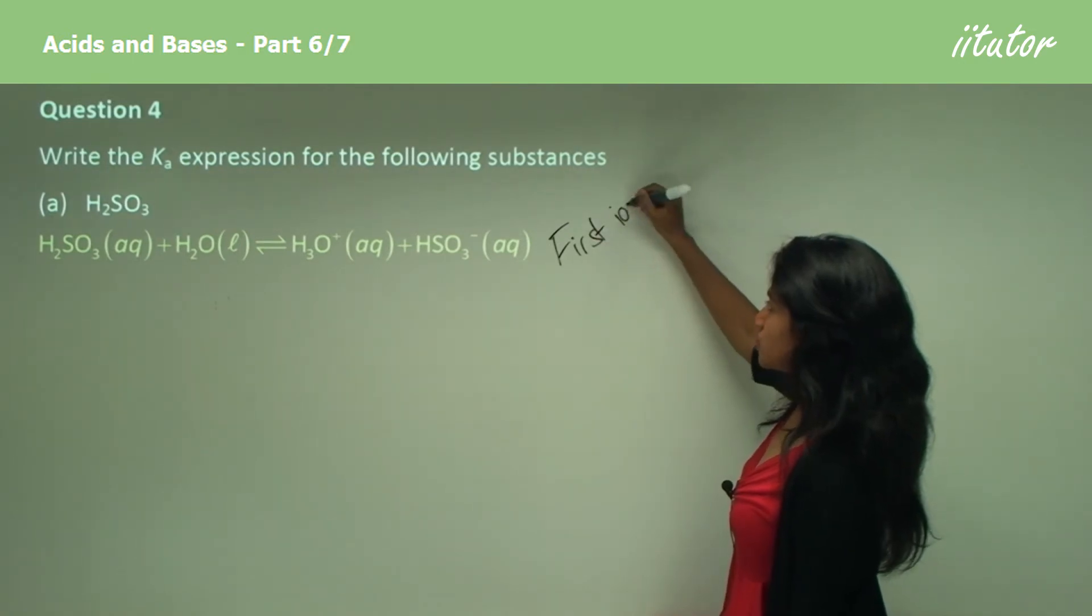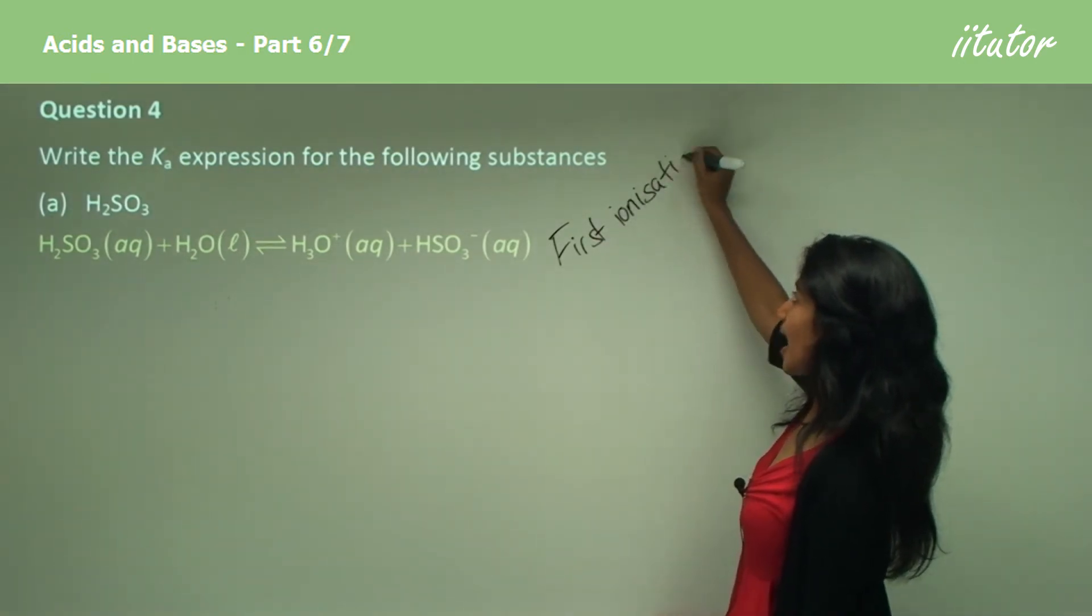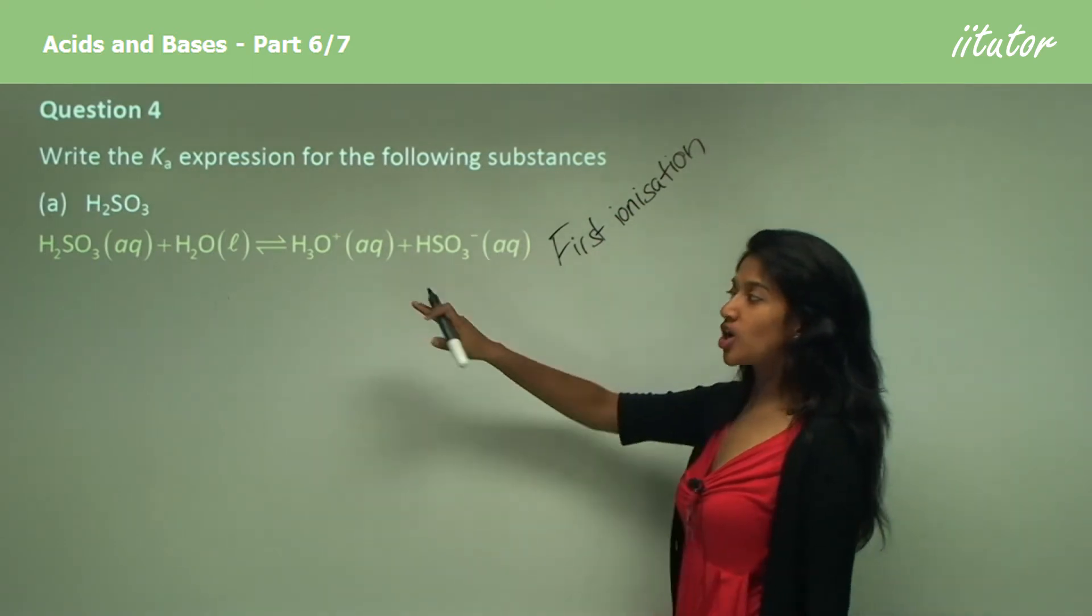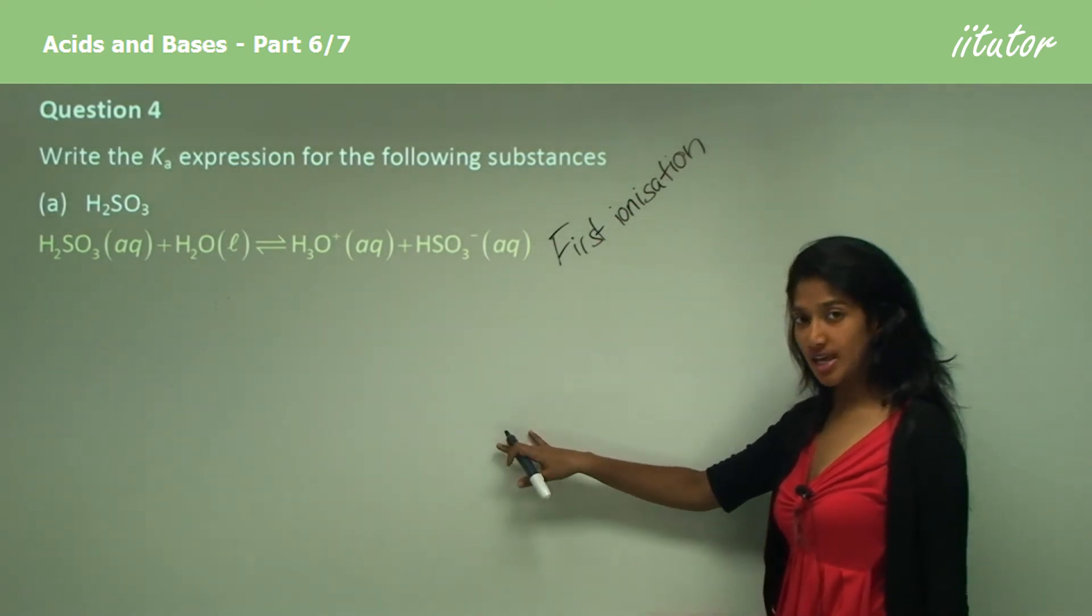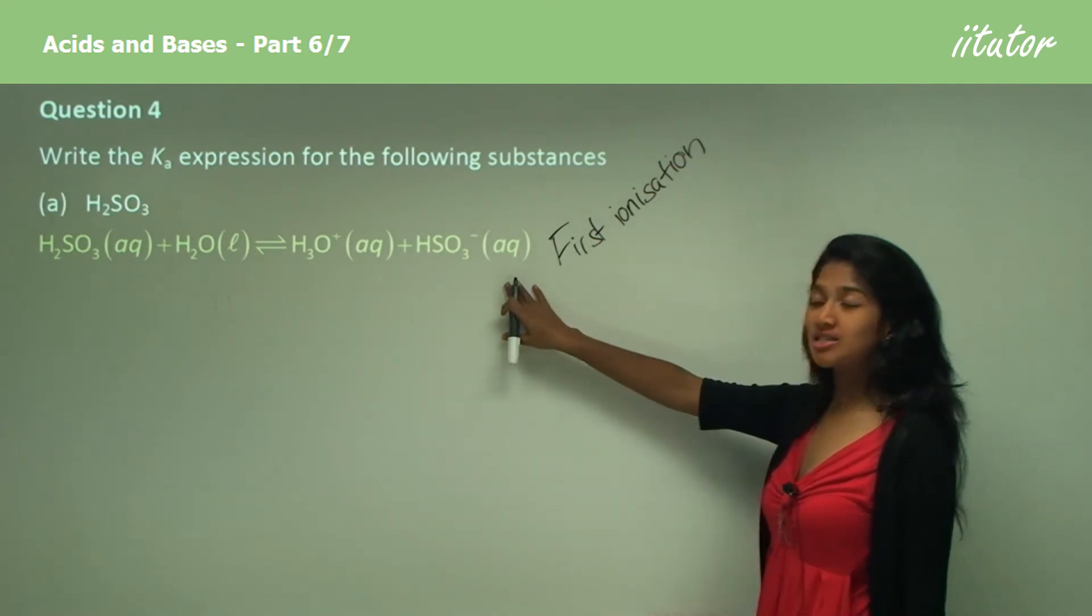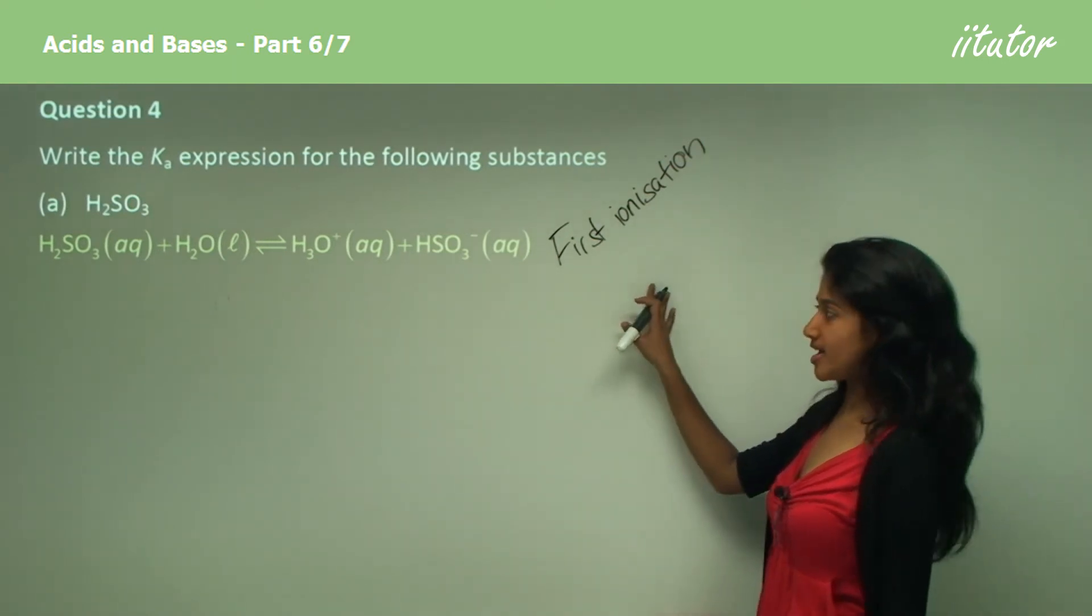This is called the first ionization. And usually when ionization does occur, it happens in steps. So each hydrogen is lost in a different step instead of losing both of them. And this is the first step. It is called the first ionization.